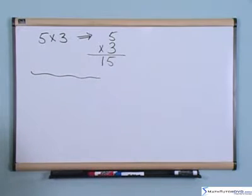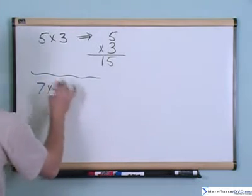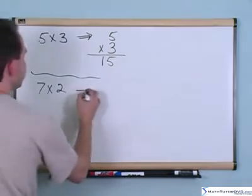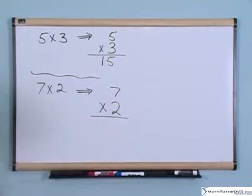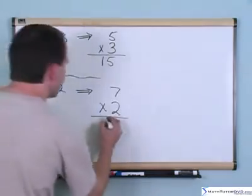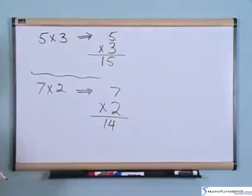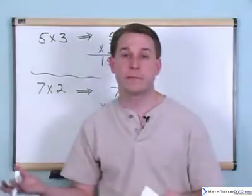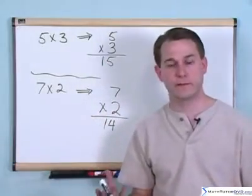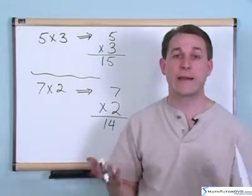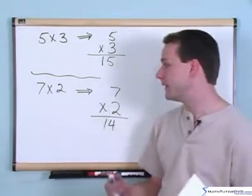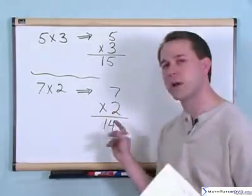The next problem is 7 times 2. Again, it's two single-digit numbers, so I'm just going to write the problem like this. You should remember from your times tables — or look it up if you don't remember, or go review the section of the DVD — 7 times 2 is 14, so you're going to write that down. Notice I'm not doing a lot to explain what's going on here, and that's because multiplication really and truly is a matter of remembering. You're just going to have to go over it over and over again, and once you do, these will come very easily.